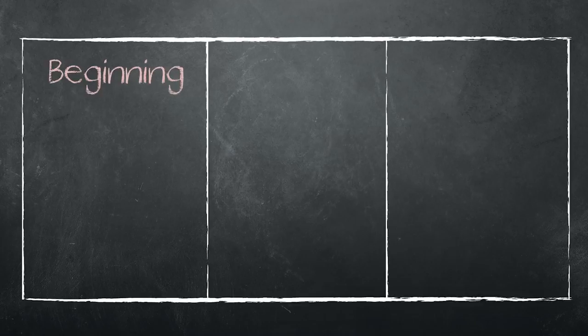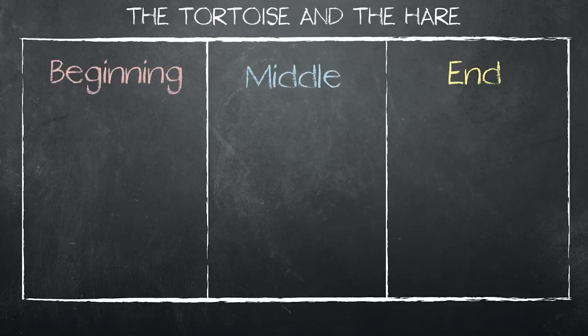Start by drawing a large poster-sized chart with three boxes and label the boxes beginning, middle, and end. Write the story title at the top.